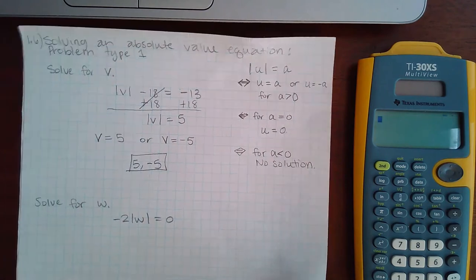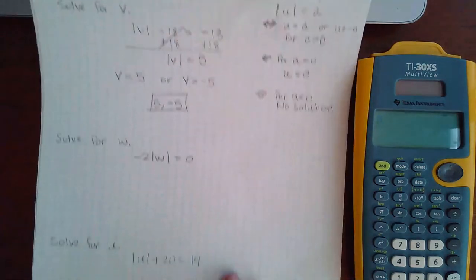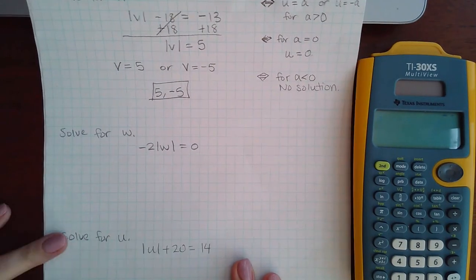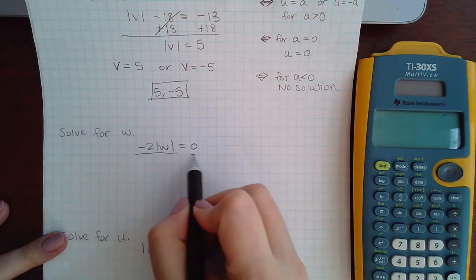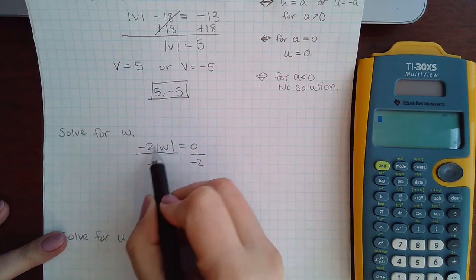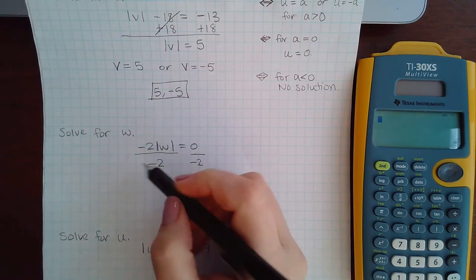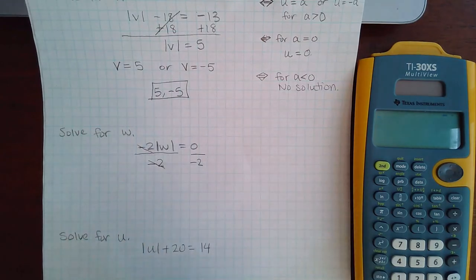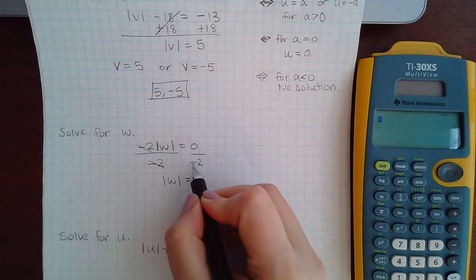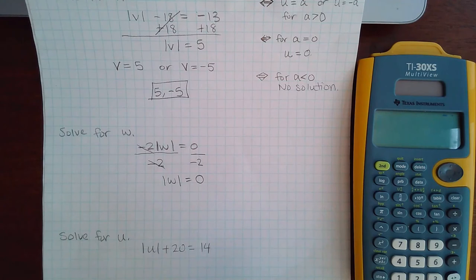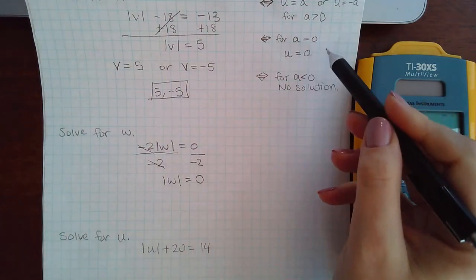Now let's look at the second example. Here I would have to get the bars by itself, I would have to divide both sides by negative two since that two right next to the bar means multiplication. But zero divided by anything is still zero.